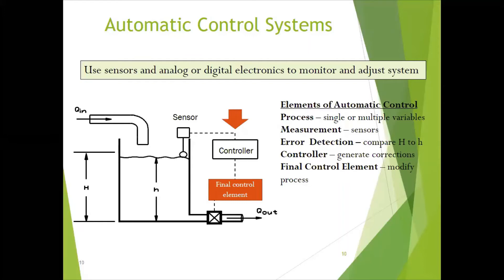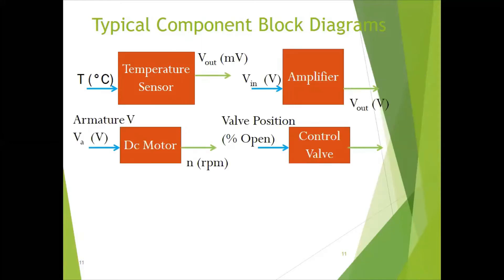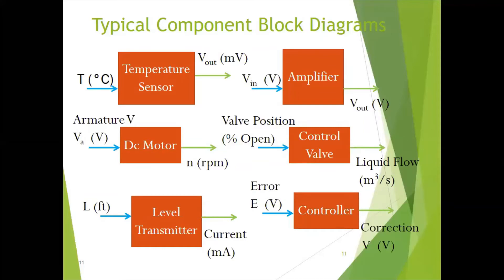To summarize: first we started with no control element, next with a manual control element, then we came to automatic control systems. When we look at every system in terms of components — a sensor, amplifier, actuator, or DC motor — this is how we can represent them. For example, a temperature sensor: it will sense the temperature and give voltage as output. So the input for a temperature sensor is temperature and the output is a voltage.